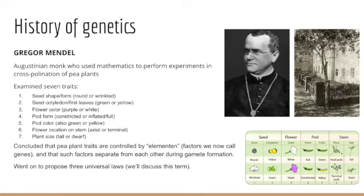Members of a gene pair separate from each other during gamete formation — one of the pair comes from the mother, the other from the father. We'll consider his findings in the form of three laws in module three: the law of segregation, where offspring acquire one hereditary factor from each parent; the law of independent assortment, the idea that different traits have an equal opportunity of occurring together; and the idea of dominance, where offspring express a dominant trait and can only express a recessive trait if they inherit both recessive factors.